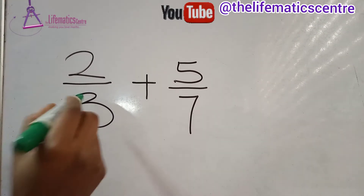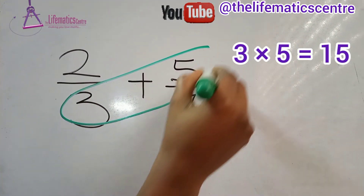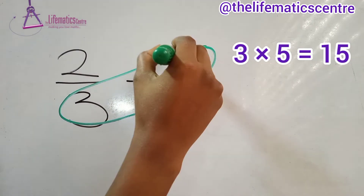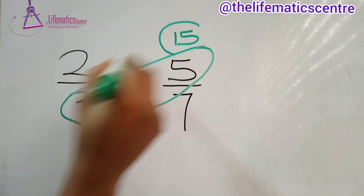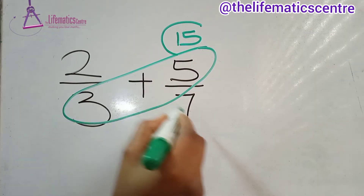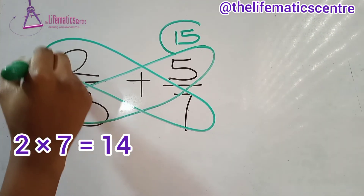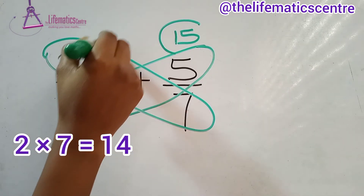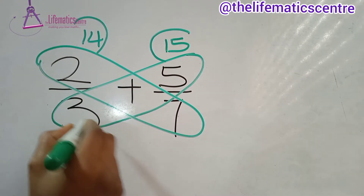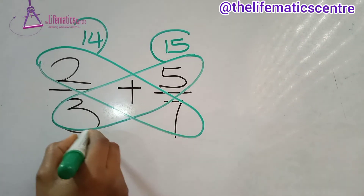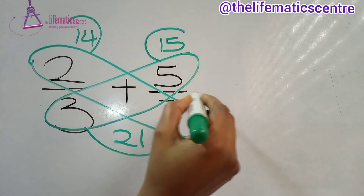3 times 5 is 15. 2 times 7 is 14. Next, we multiply the denominators: 3 times 7 is 21.